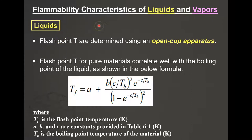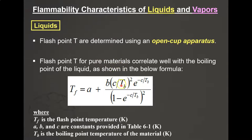Flammability characteristics of liquids and vapors: for liquids, flashpoint temperatures are determined using an open cup apparatus. There is an equation that correlates flashpoint temperature (TF) and boiling point temperature (TB), establishing a relationship between these two important flammability parameters.